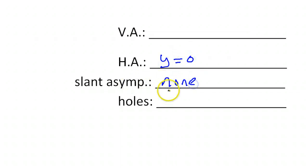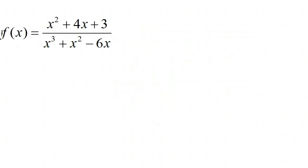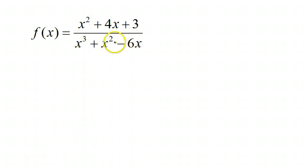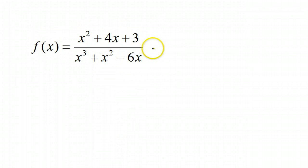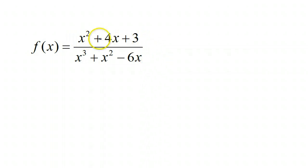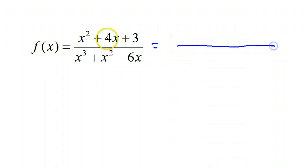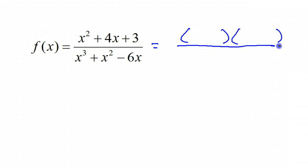We said none for the slant asymptote. Now let's talk about vertical asymptotes and holes. Let's try to factor these and see if anything will cancel out, because anything that looks like a vertical asymptote might actually be a hole if that factor cancels out. So you have to factor. This numerator looks factorable — it has that quadratic look to it, and quadratic trinomials are very often factorable.